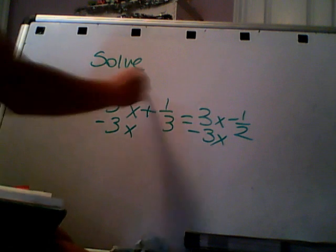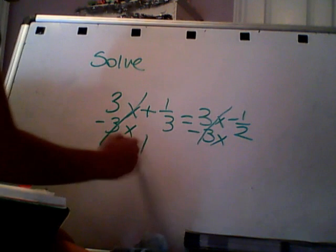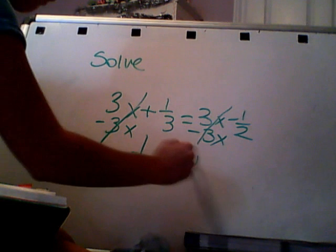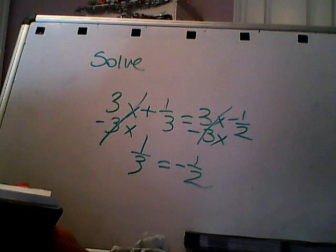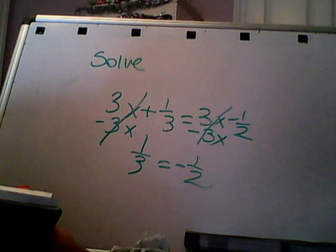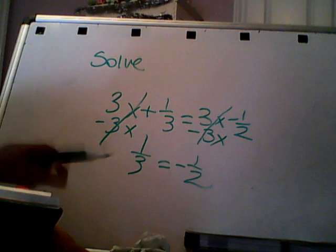And what that does is it leaves us with one-third equals negative one-half. And that can never be true. The x was cancelled.